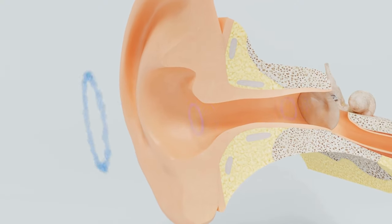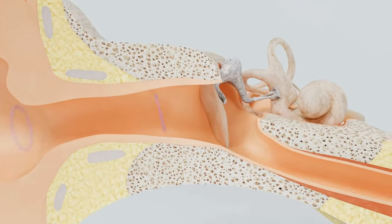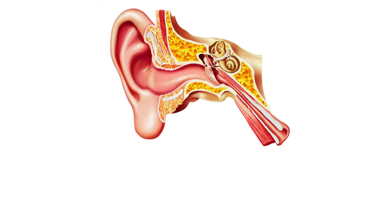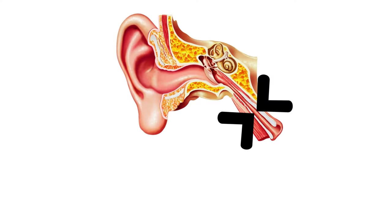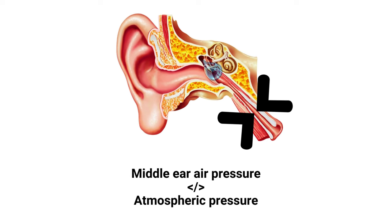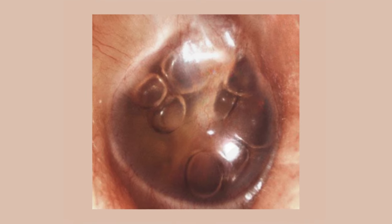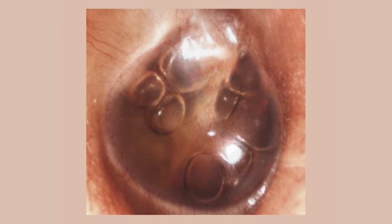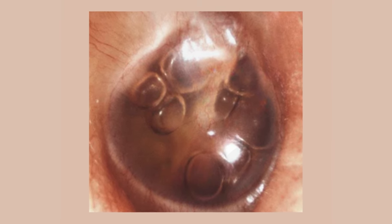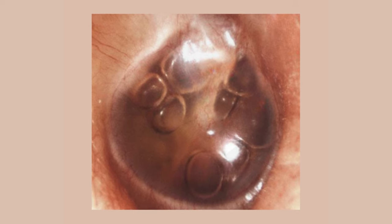If the eustachian tube becomes blocked due to inflammation, allergies, infections, or other conditions, it can lead to a pressure imbalance. This negative pressure can draw fluid from the surrounding tissues into the middle ear cavity, leading to the accumulation of a non-infectious fluid referred to as an effusion. This fluid accumulation can cause the eardrum to bulge and impair its ability to vibrate properly in response to sound waves, leading to hearing difficulties, a sensation of fullness or pressure in the ear, and in some cases, balance problems.